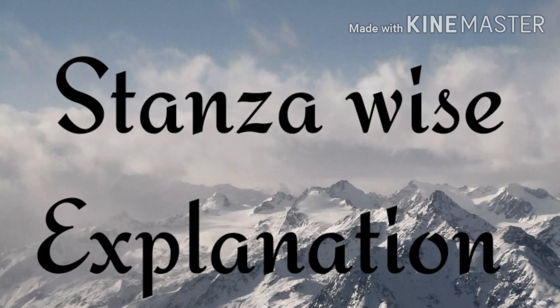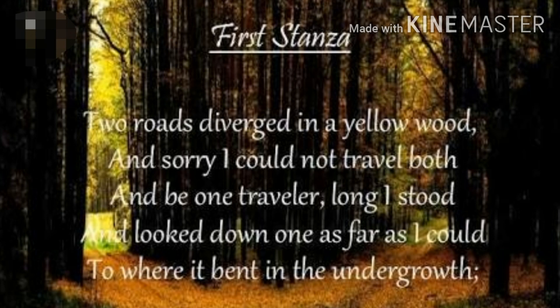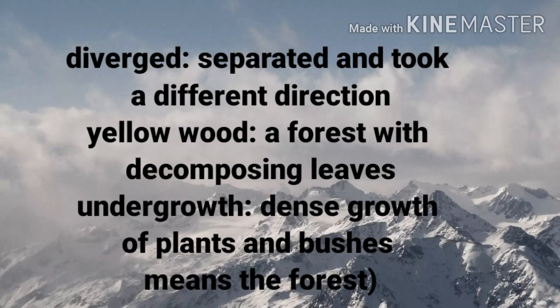Now I'll give you the stanza-wise explanation for your clear understanding. Stanza 1: Two roads diverged in a yellow wood, and sorry I could not travel both, and be one traveler long I stood, and looked down one as far as I could, to where it bent in the undergrowth. Here, diverged means separated and took a different direction. Yellow wood means a forest with decomposing leaves. Undergrowth means dense growth of plants and bushes, meaning the forest.